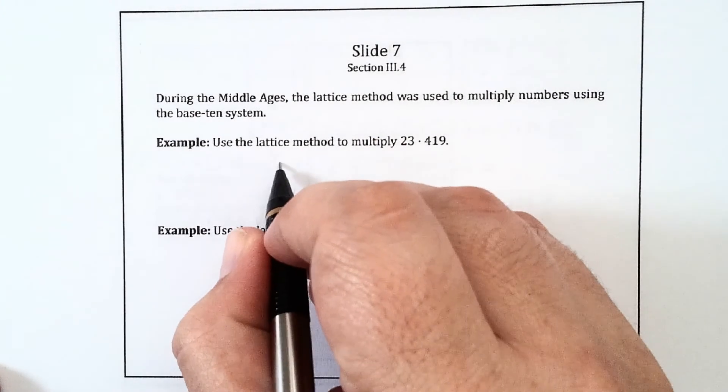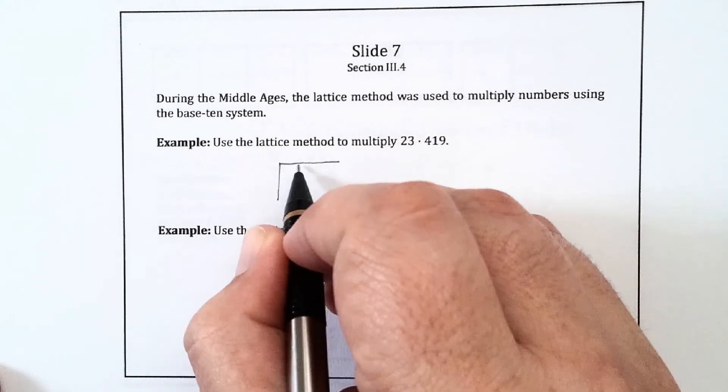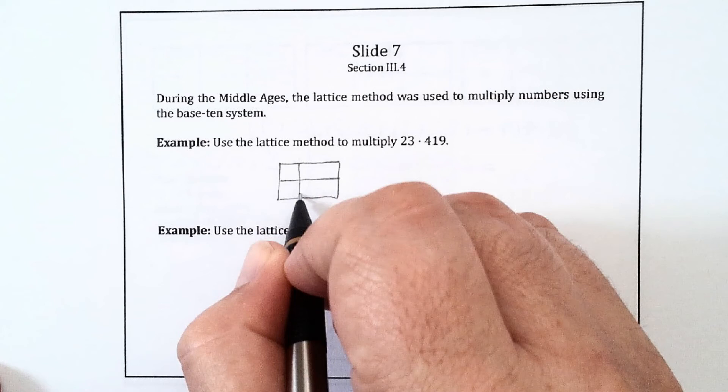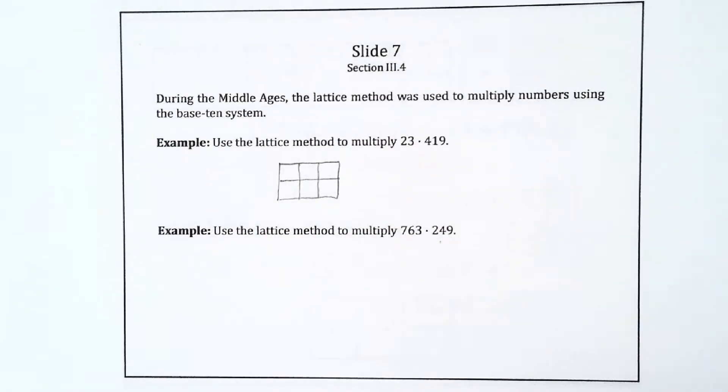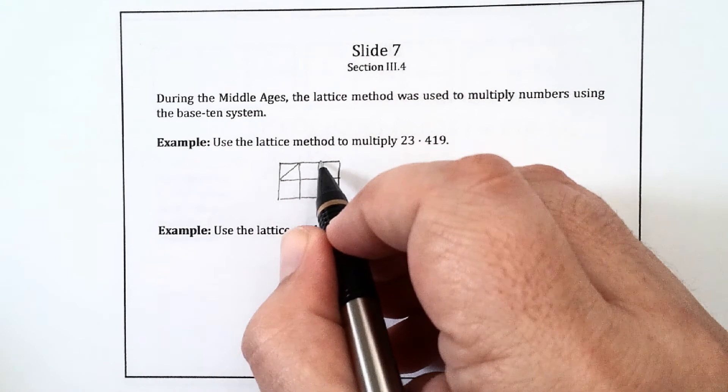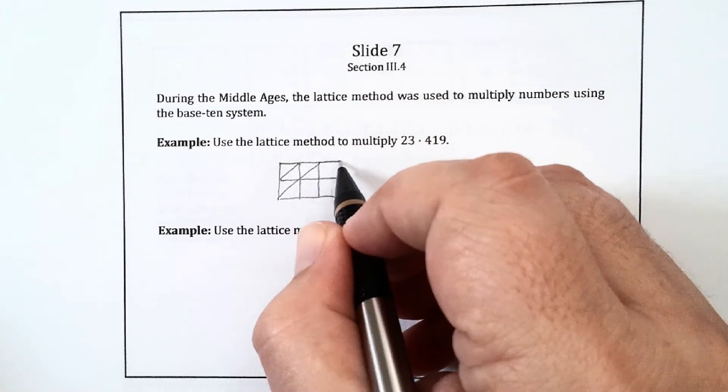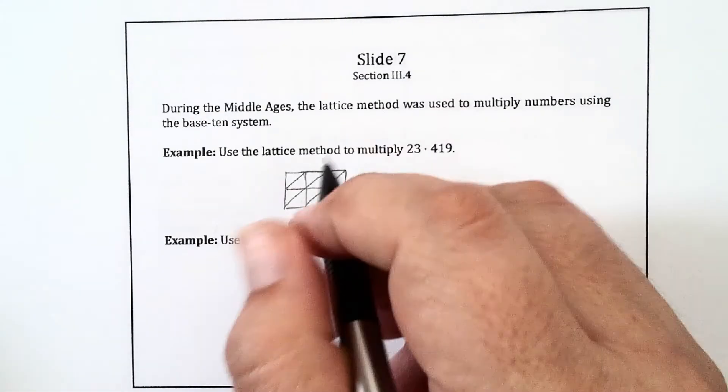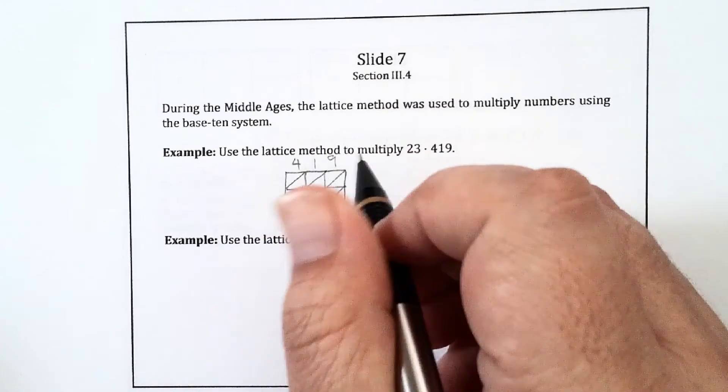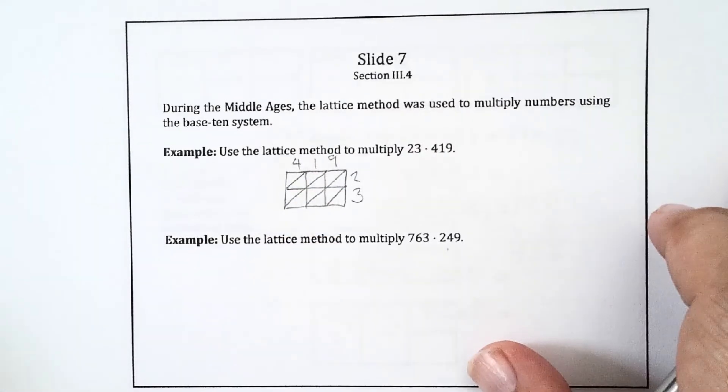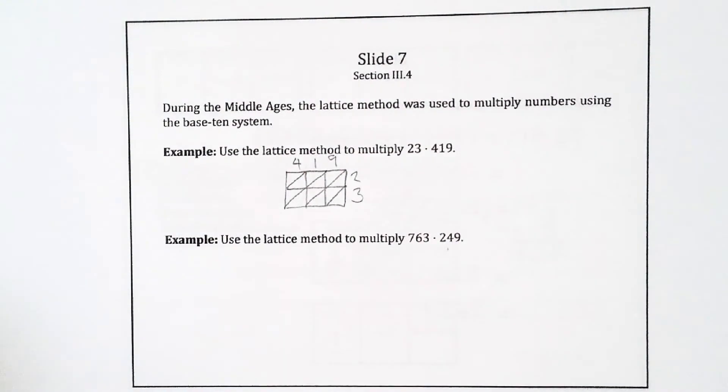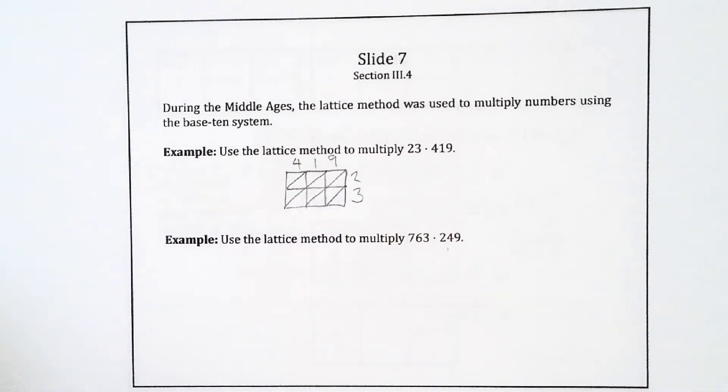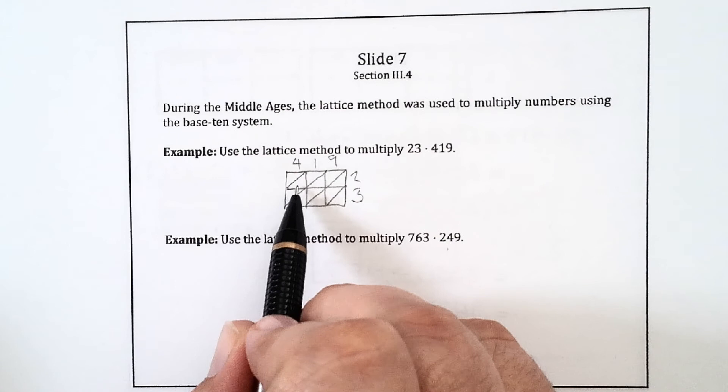I didn't leave myself much space here, so I have to make kind of a small box. I want a 2 by 3 box, a rectangle that I'm going to divide up into six squares. And I'm going to draw diagonals from the upper right to the lower left, like that. And across the top, I put my 4, 1, and 9. Down this side, I put my 2 and 3. And now I'm ready to multiply. In each box, I write the product of the number above and to the right. I put the 1s place in the bottom corner and the 10s place in the top corner.